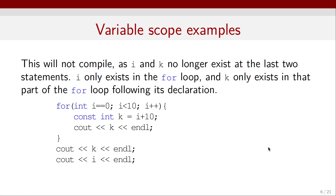In this case, this code will not compile. The variable i only exists inside the for loop's parentheses and curly brackets, and the integer k is also declared between those curly brackets, so it is not accessible outside the for loop. If I try to call these variables i or k outside the loop where they are defined, they cannot be accessed. The compiler doesn't know what k and i are outside this for loop, so it cannot print them to the screen.